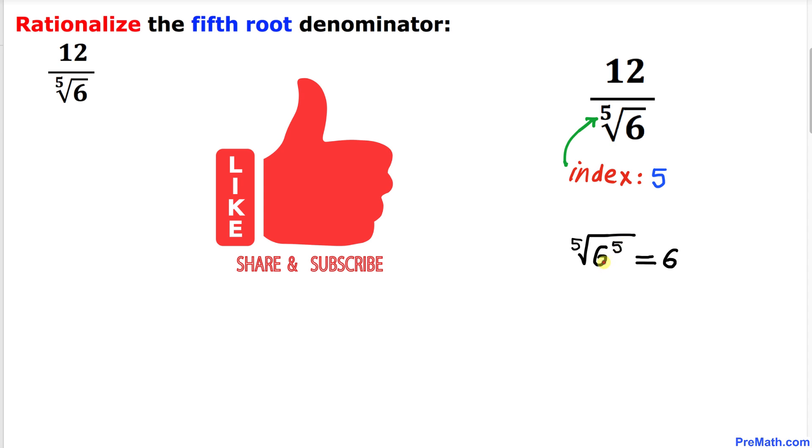One more thing to keep in mind: if we have 6 to the power 5 and our index is 5, in other words we have a fifth root, then this exponent and this index undo each other, so we simply end up with 6.